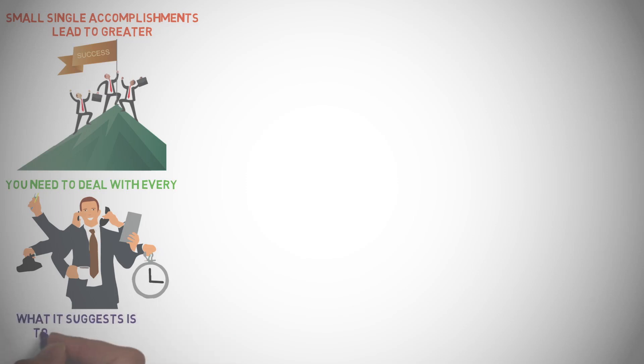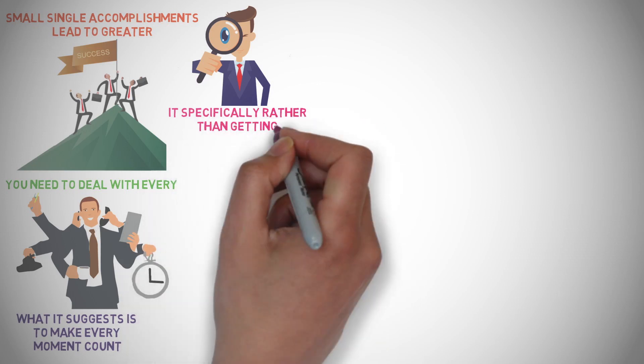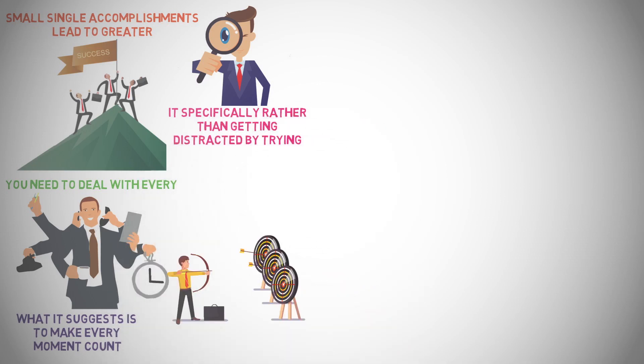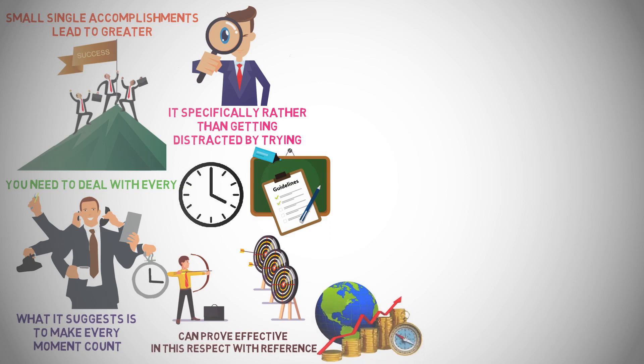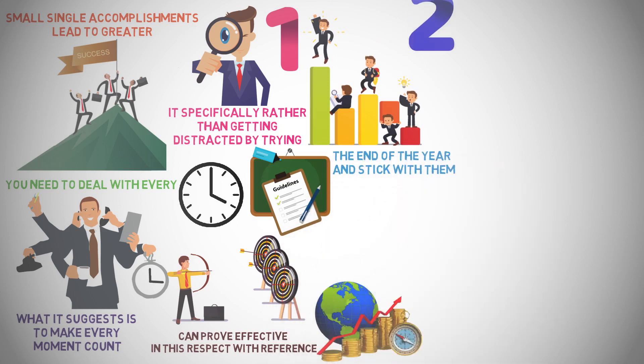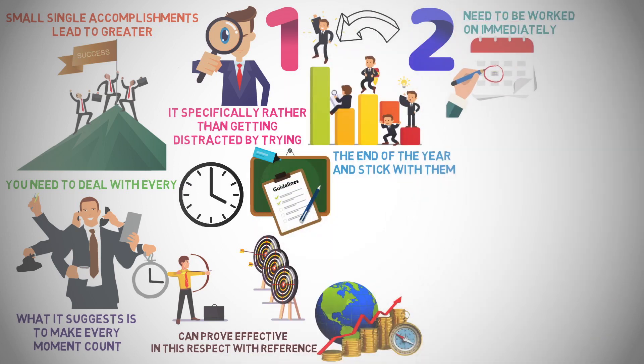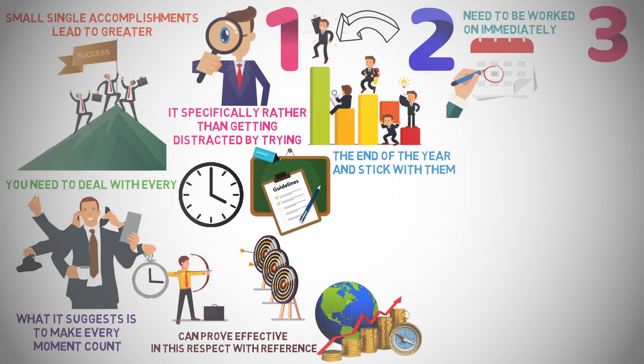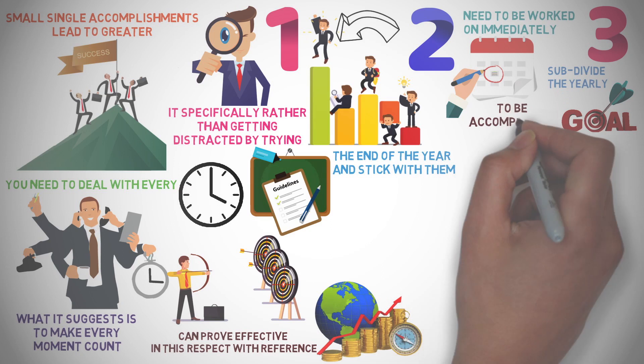What it suggests is to make every moment count by focusing on it specifically rather than getting distracted by trying to approach the multiple tasks at a time. The following guidelines can prove effective in this respect with reference to the context of new economy. 1. Write down the goals you want to achieve by the end of the year and stick with them. 2. Select what goals need to be worked on immediately and set deadlines for each of them. 3. Subdivide the yearly goals into monthly and weekly goals to be accomplished by then.